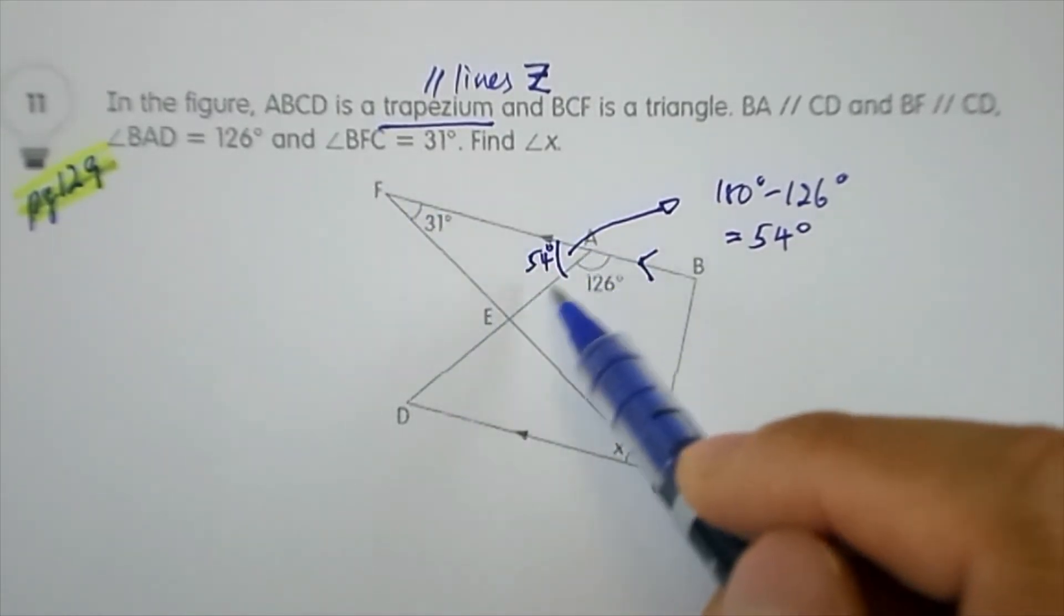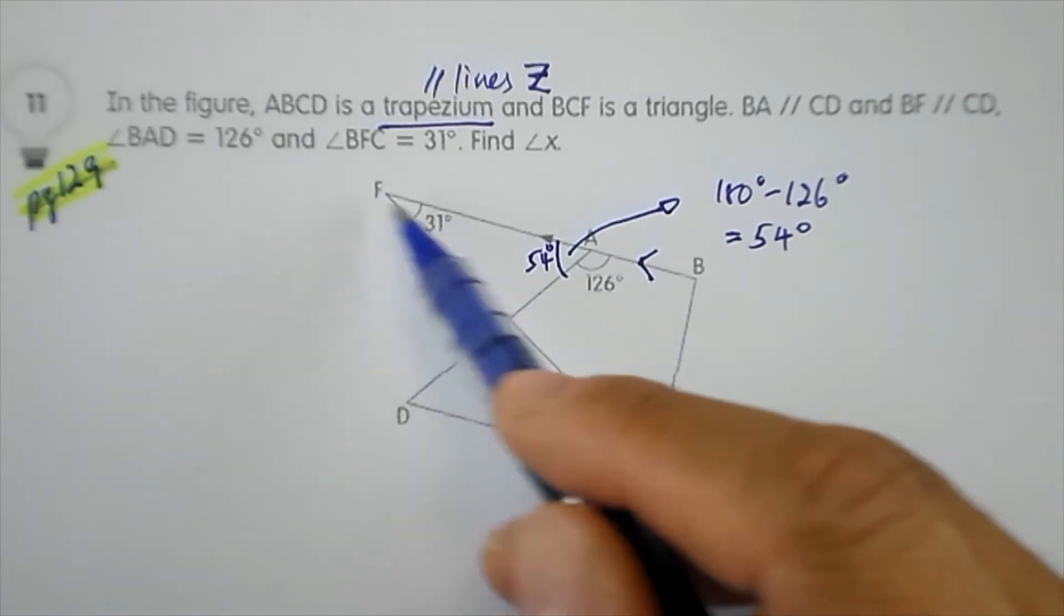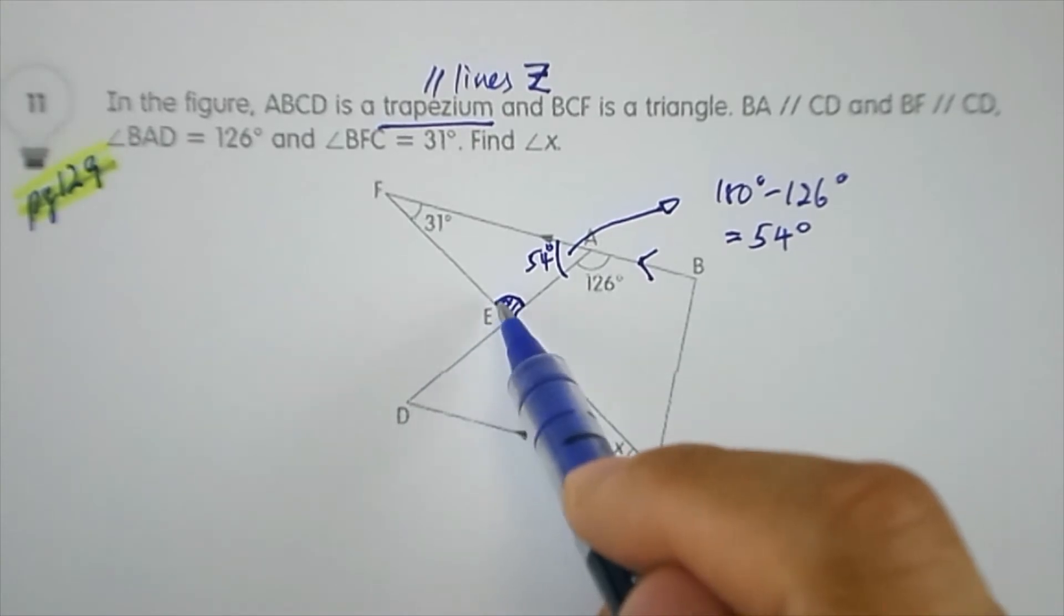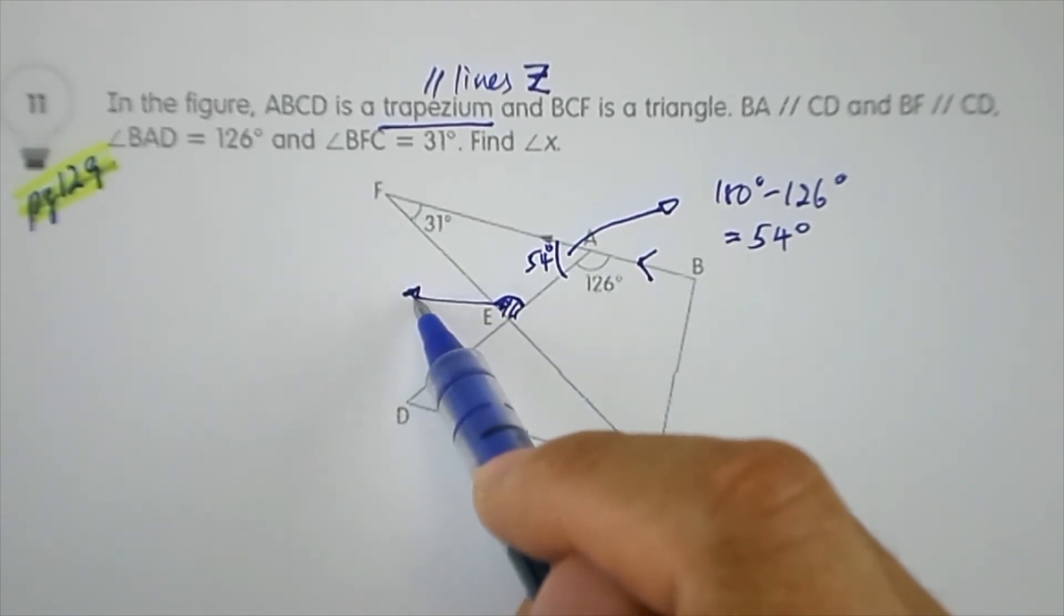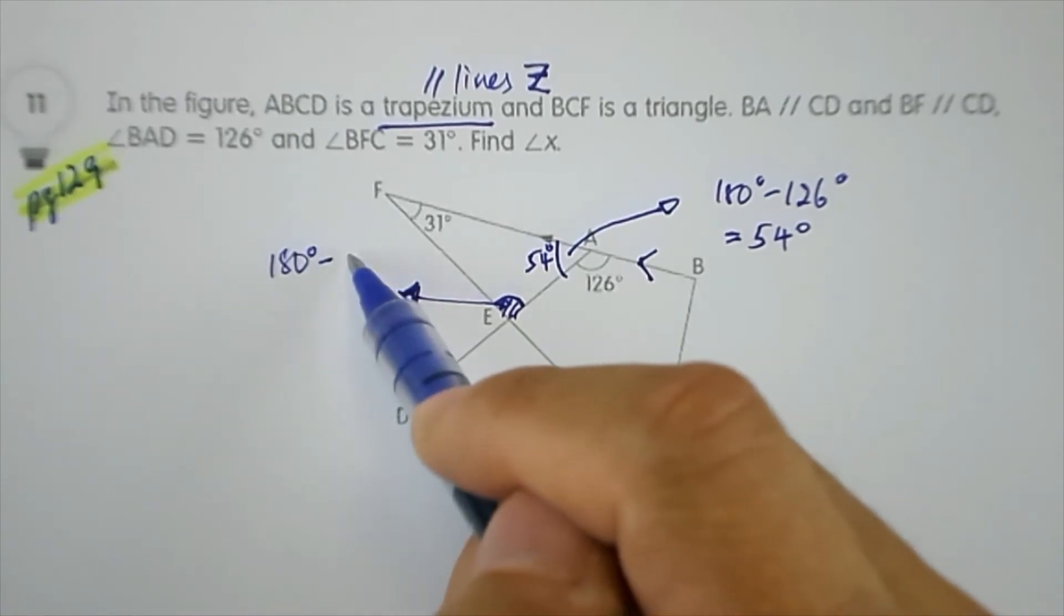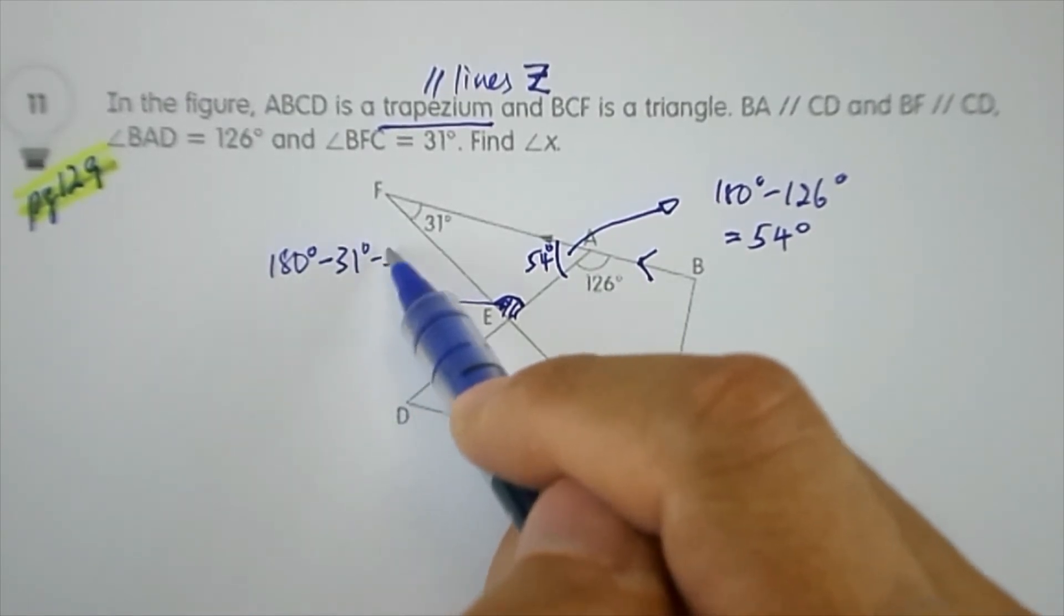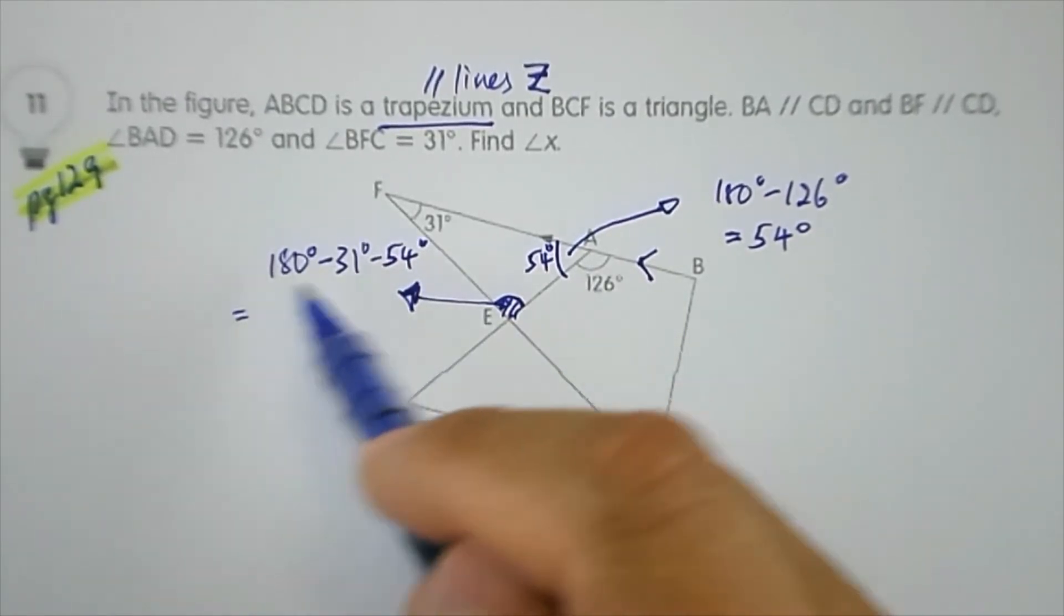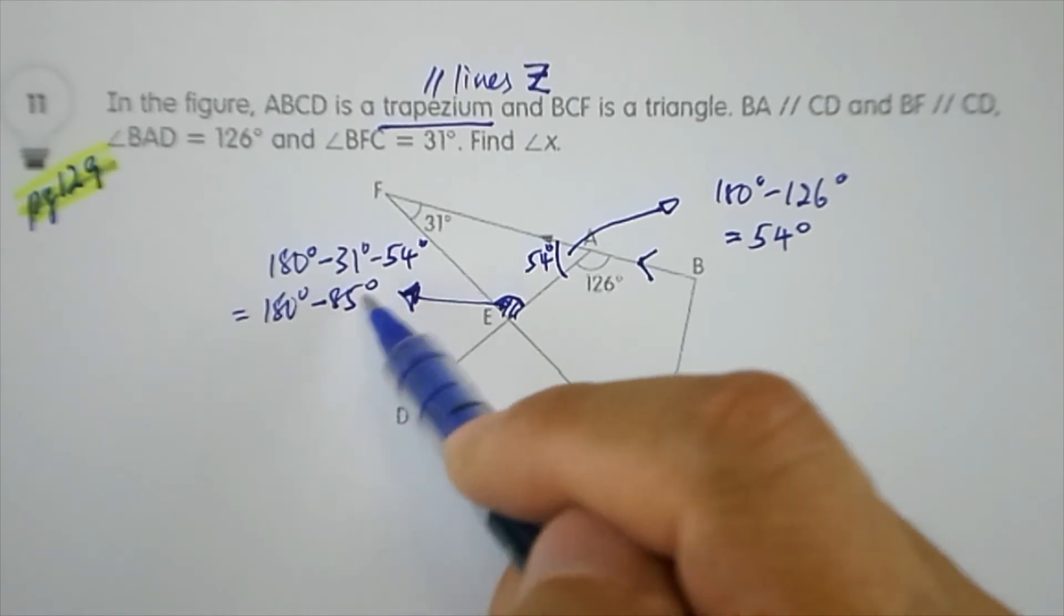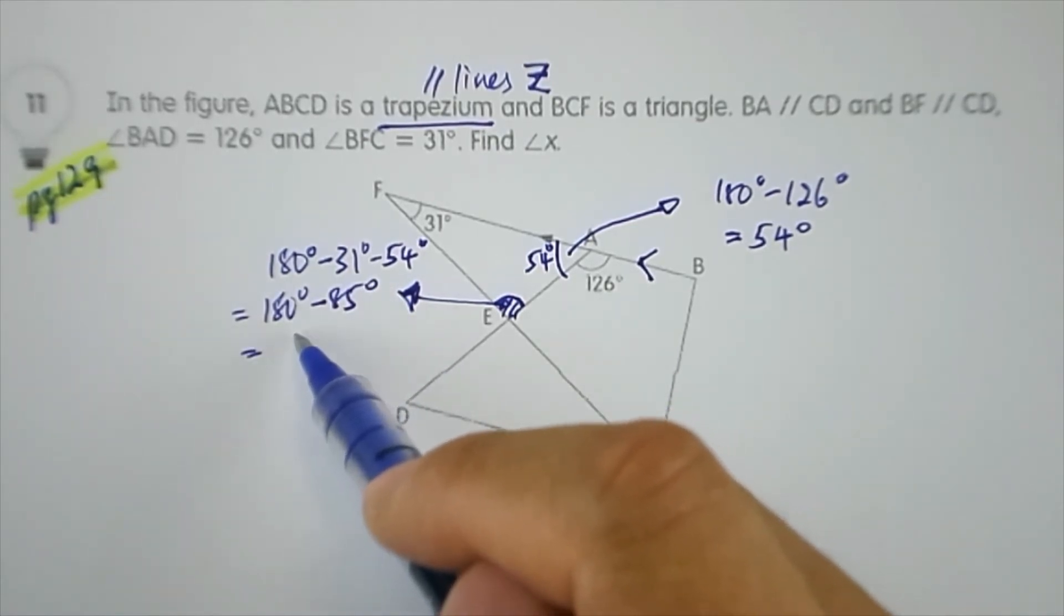Using the internal angles of a triangle, we can find this other angle here. This angle is equal to 180 degrees minus 31 degrees minus 54 degrees, which gives us 180 degrees minus 85 degrees, which equals 95 degrees.